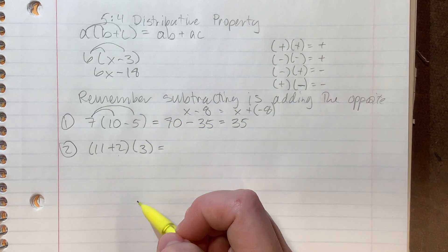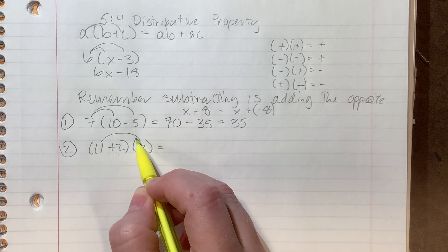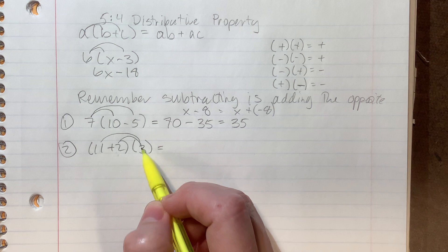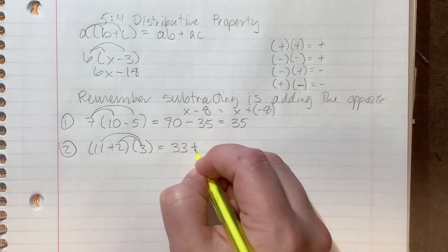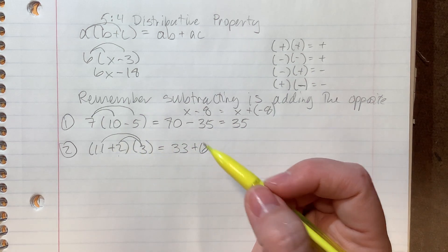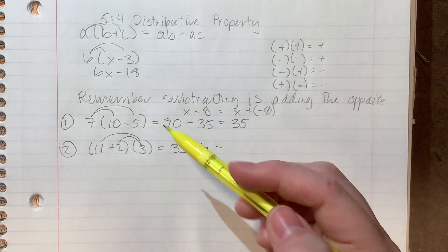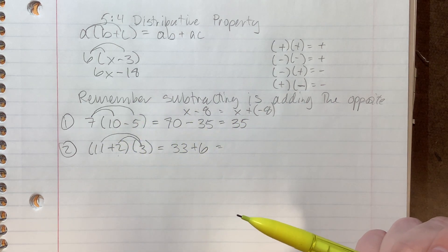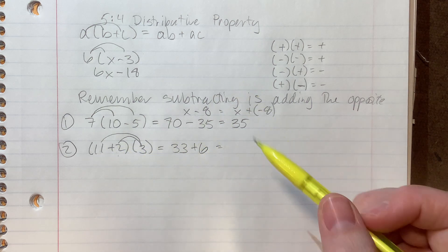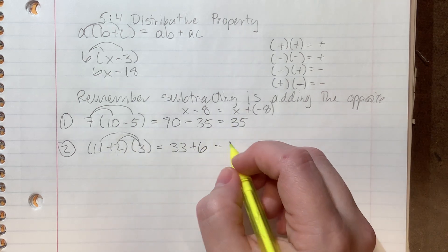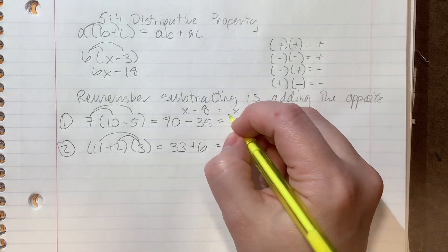We're practicing distributive property. And so we need to multiply everybody on the inside by the guy on the outside. And so if we do that, 11 times three is 33. And two times three is six. And again, we didn't multiply by negative. So we don't have to worry about changing signs. And so then we can do and honestly, 13 times three, I probably would have had to write out or use calculator for.